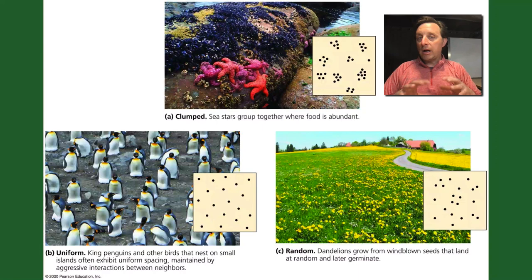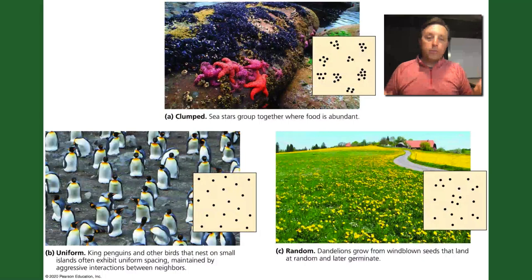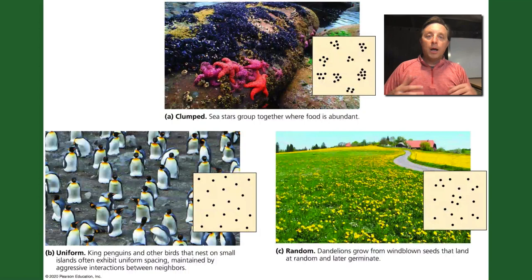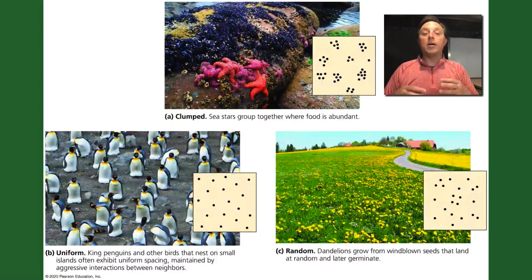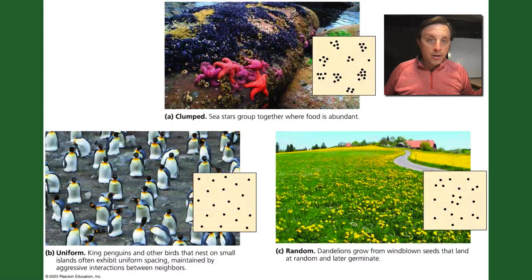Within a single geographical range, how are individuals distributed throughout that area? There are three basic patterns. The clumped pattern usually arises due to resource availability. Uniform patterns are mainly seen in territorial animals. And random distribution is very often seen with plants — if resources are evenly distributed, plants grow wherever seeds fall.